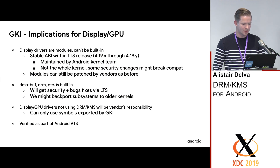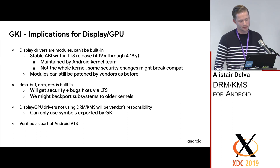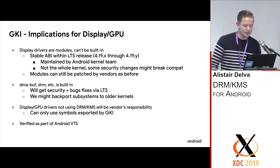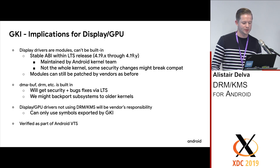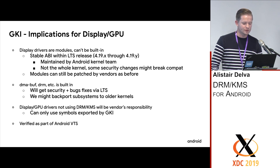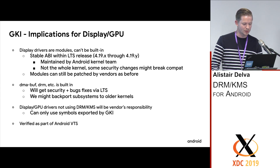What does this mean for display and graphics? All drivers are modules, so although vendors can still patch their drivers, they can only use the symbol interface exported by GKI. In the case of DRM, the DRM core will be compiled into GKI even though drivers are compiled outside of it. That means any vendor patches must be incorporated into the Android kernel by the time GKI is finalized. We're also thinking about building DMA-buf into the GKI image for security and bug fixes via LTS. DMA-buf has to be built into the kernel anyway since it doesn't support being built as a module. This whole process will be verified by Android VTS.